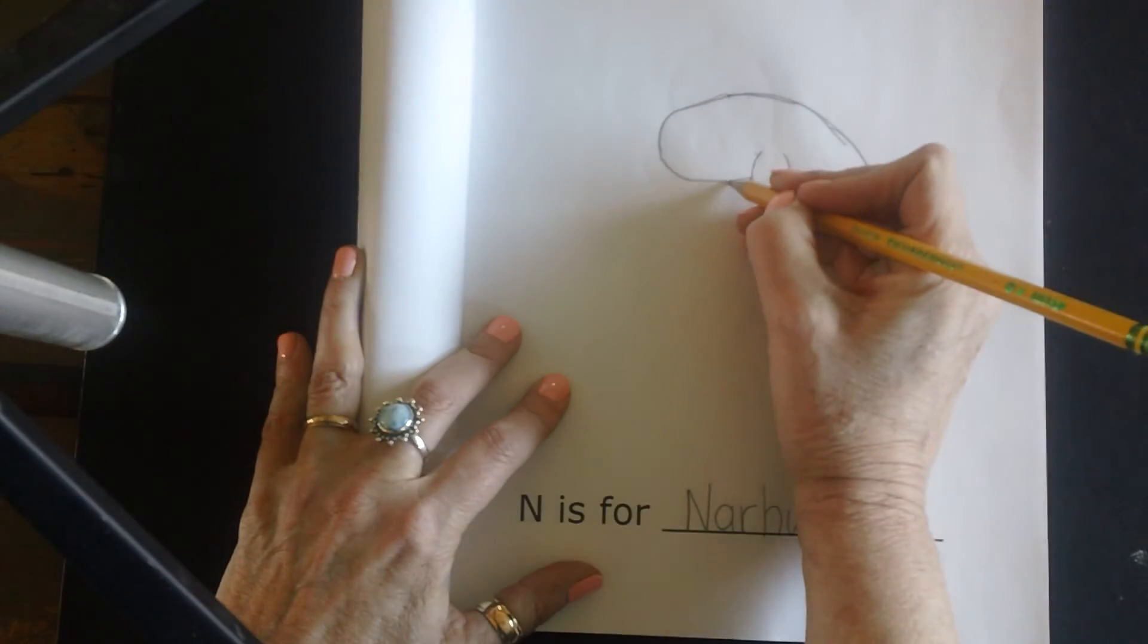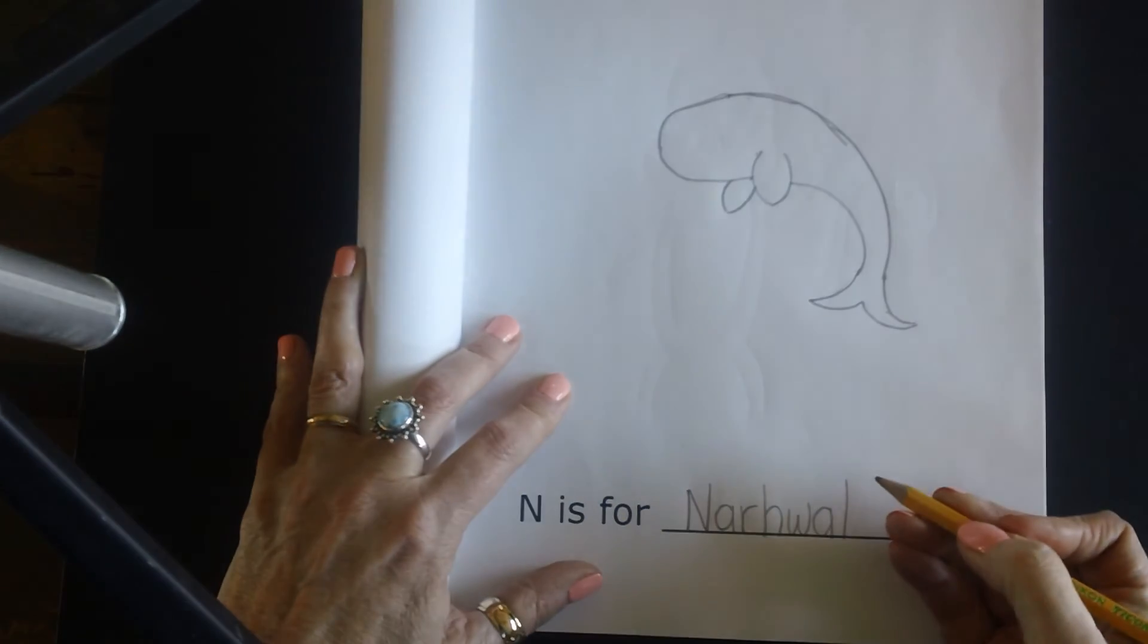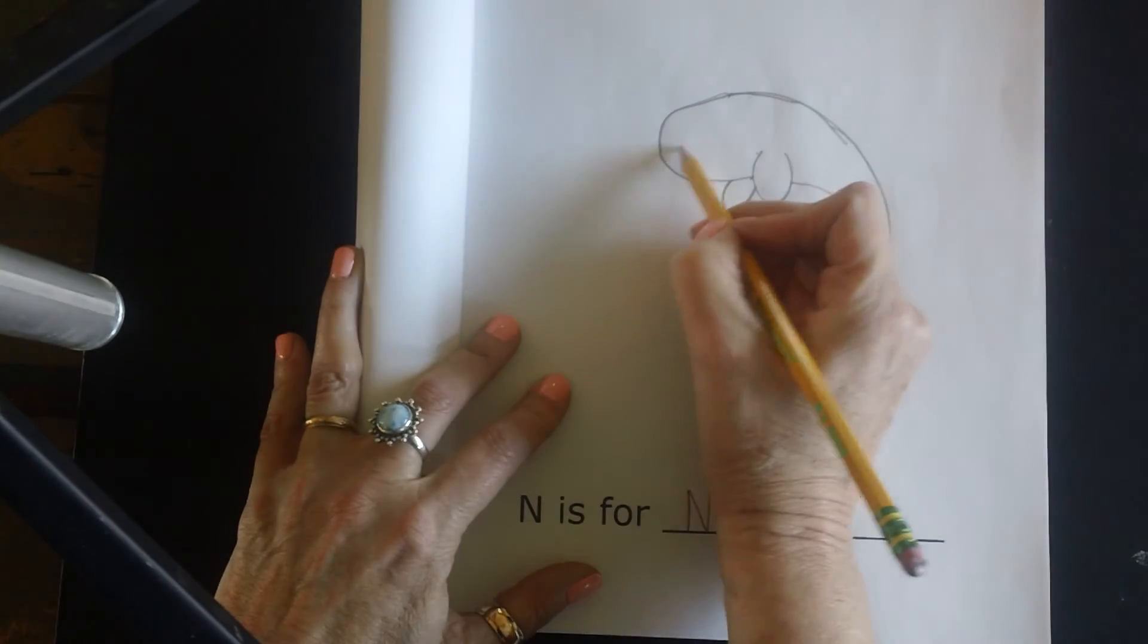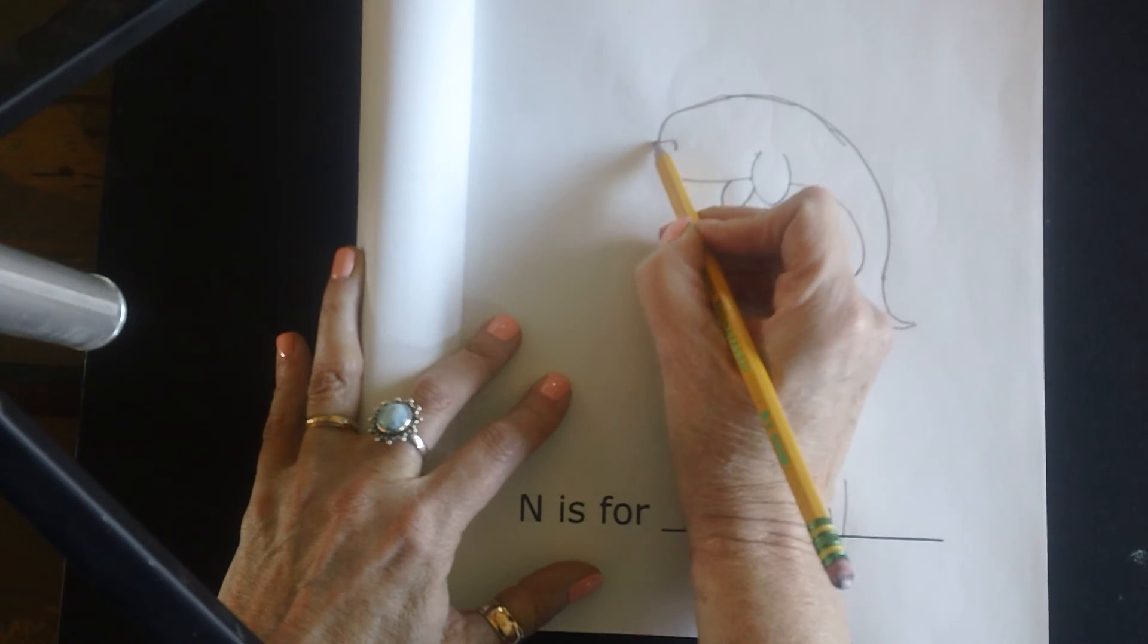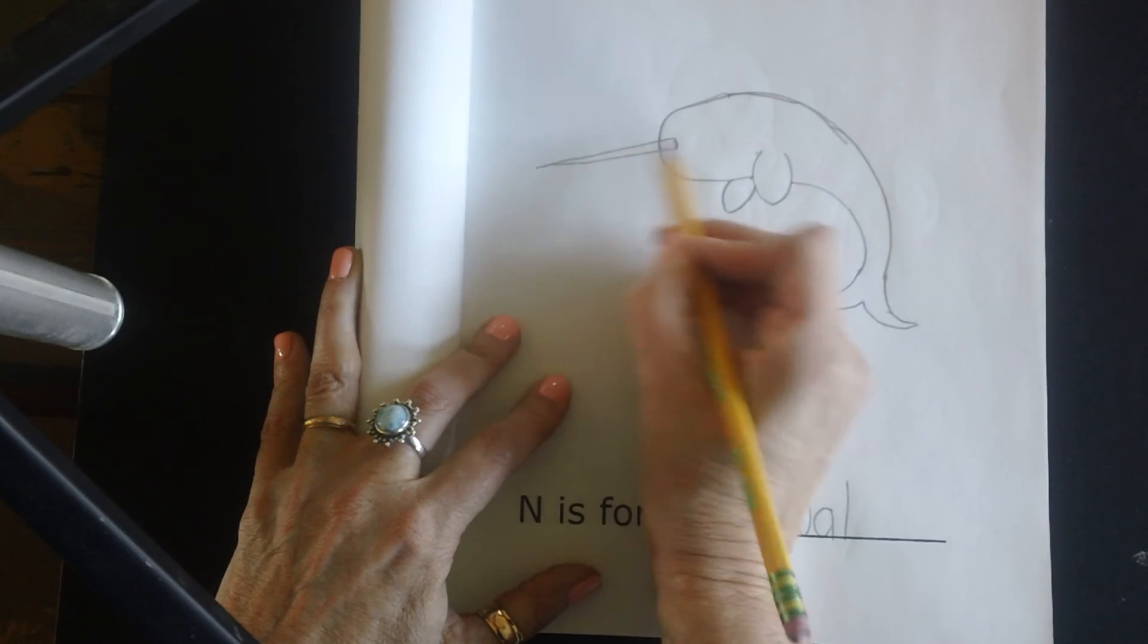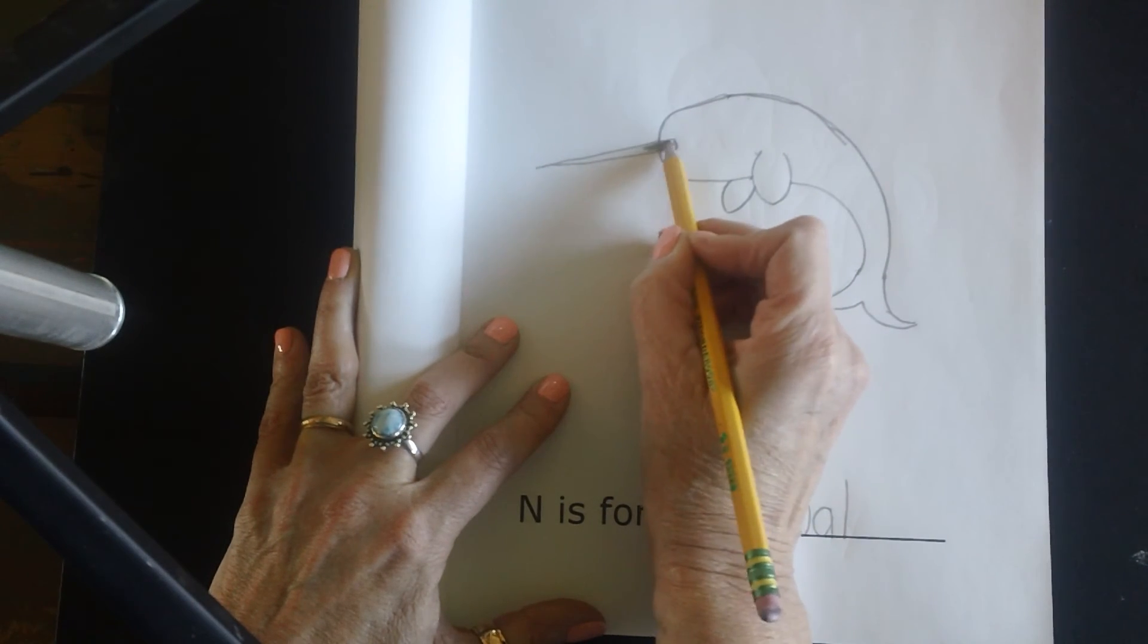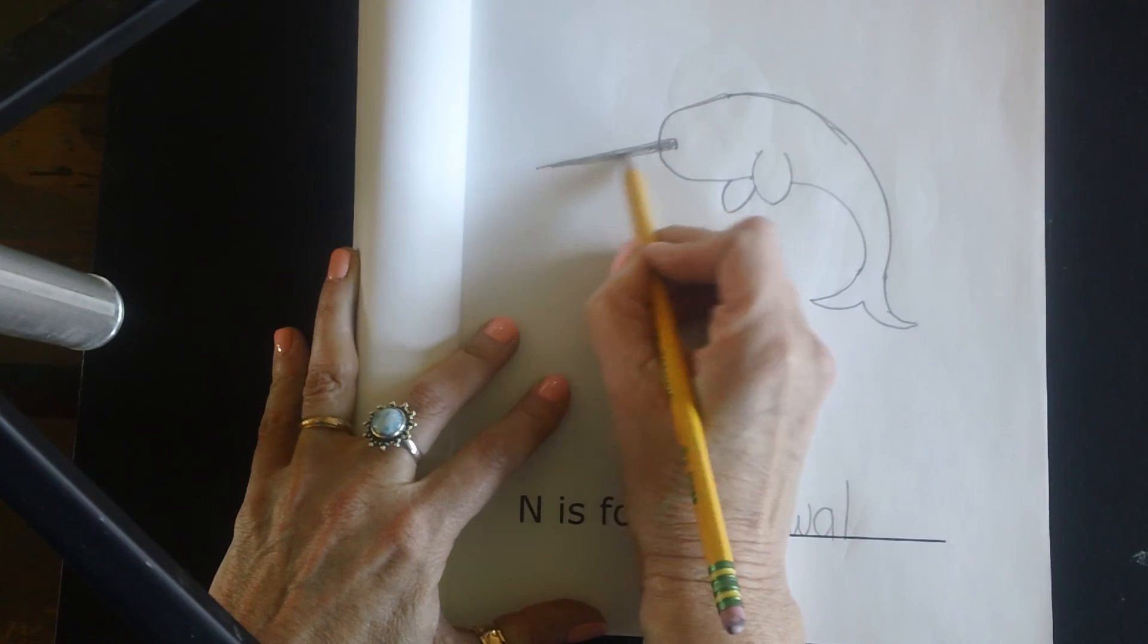All right, but let's give him another fin first. So I'm going to give him another little fin peeking out of the back. And this is the part I like, making that horn or tusk. He's kind of like the unicorn of the sea. So we don't have to erase, we're just going to shade in that tusk.